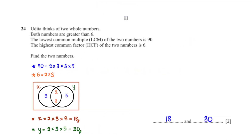Udita thinks of two whole numbers. Both are greater than 6. The LCM of the two numbers is 90 and the HCF is 6. Find the two numbers. Using the Venn diagram method, we work backwards from 90 and 6, writing them as products of their prime factors.